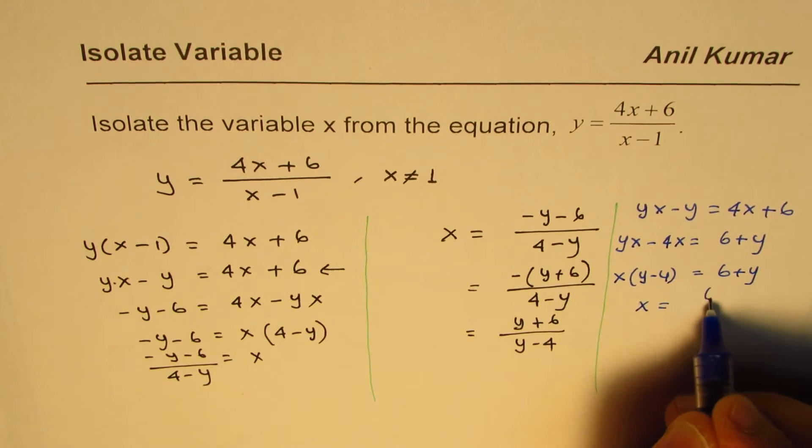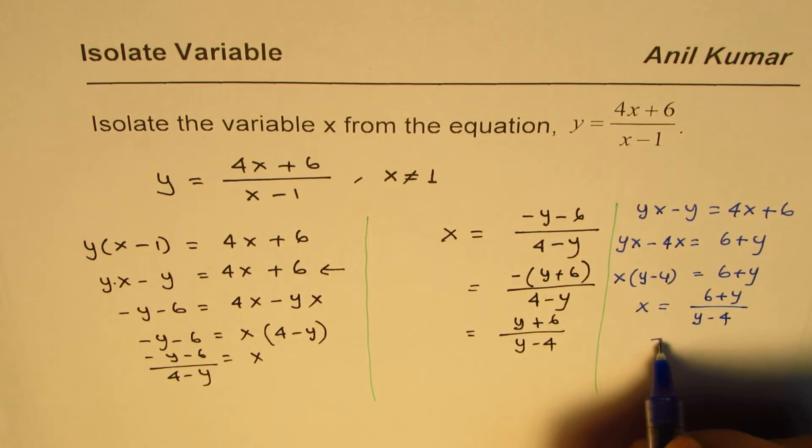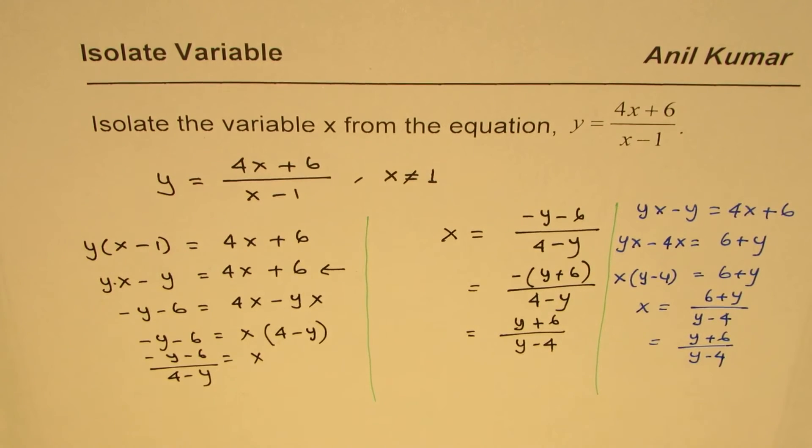And dividing, we get x equals 6 plus y divided by y minus 4. So it's a good idea to write y first: y plus 6 over y minus 4.